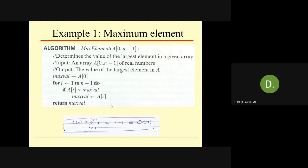The number of elements present in the array is the input size, so step 1 is complete. Now we find the basic operation — the most time-consuming operation. Generally, the operation inside the looping statement is the most time-consuming. Inside the for loop, two operations exist: comparison and assignment. The comparison operation executes more times than the assignment operation, so we consider comparison as the basic operation.